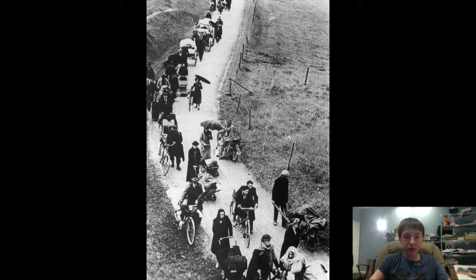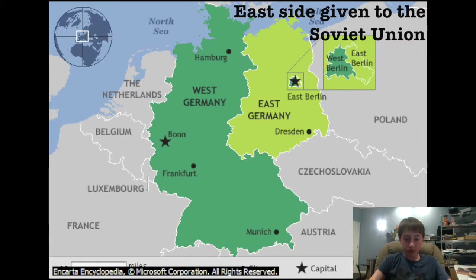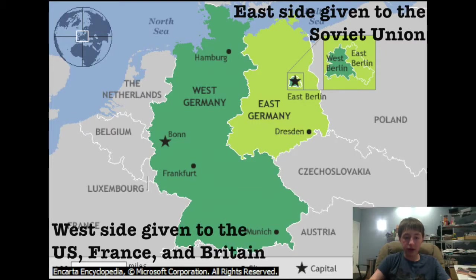Originally, the Berlin Wall was created because there were tons of people fleeing from East Berlin to West Berlin. If you don't know what happened over there, you probably don't know what East and West Berlin are. After World War II, Germany was left split in half. The East side was given to the Soviet Union, and the West side was split between the United States, France, and Britain.